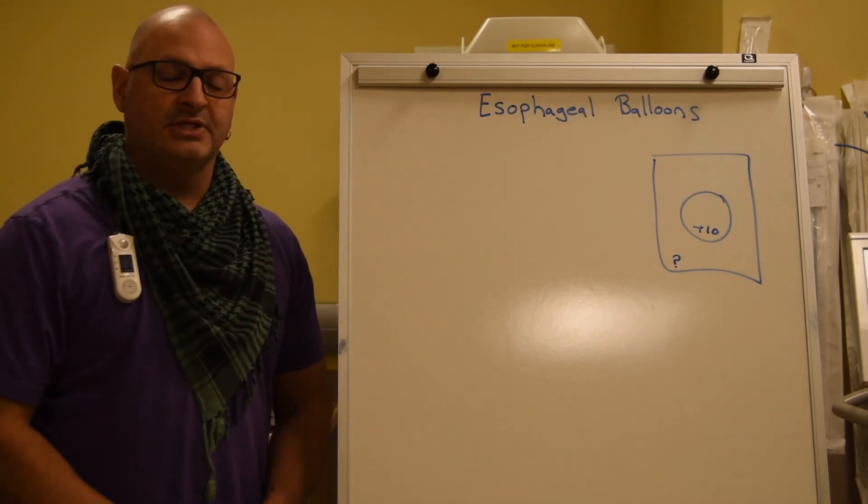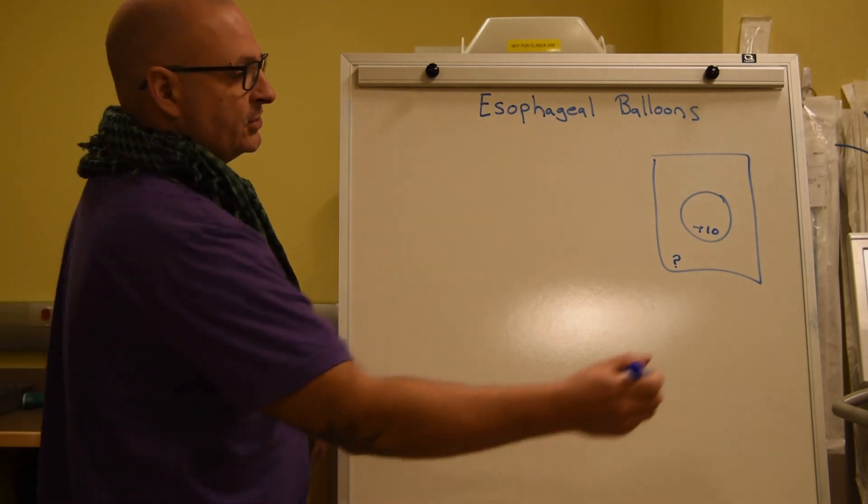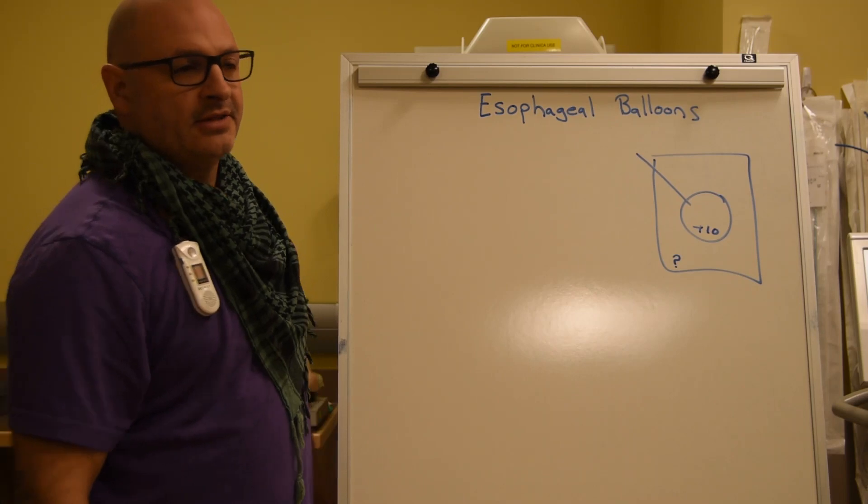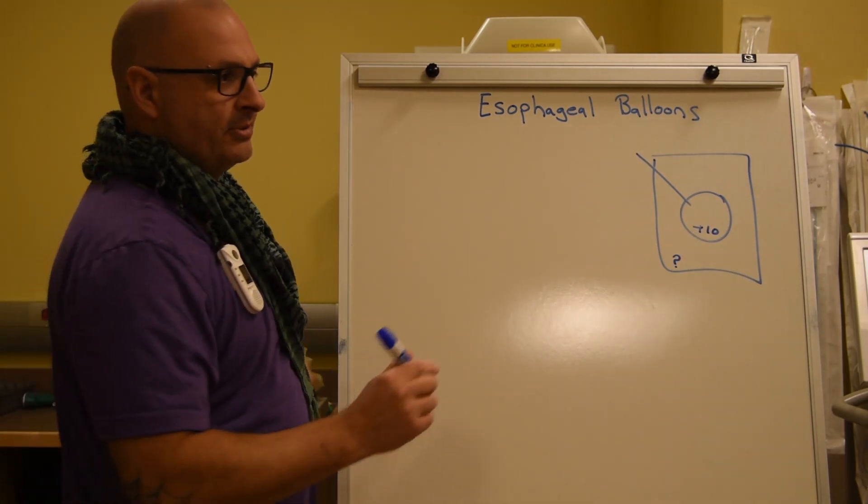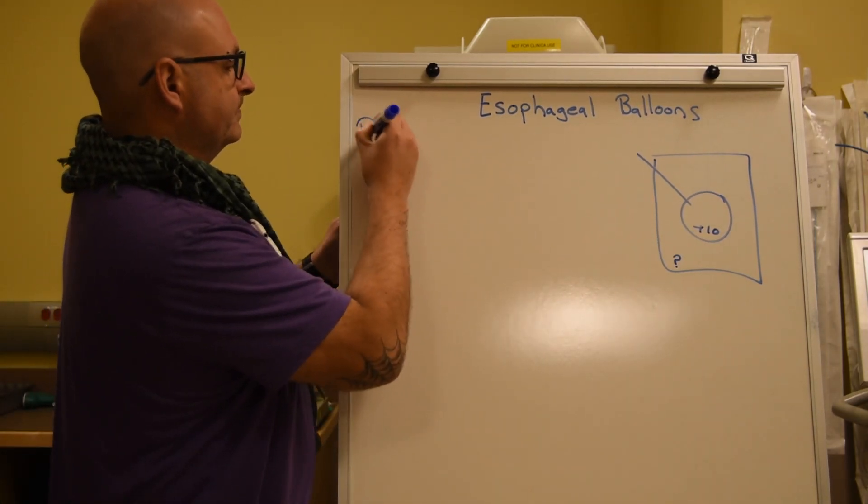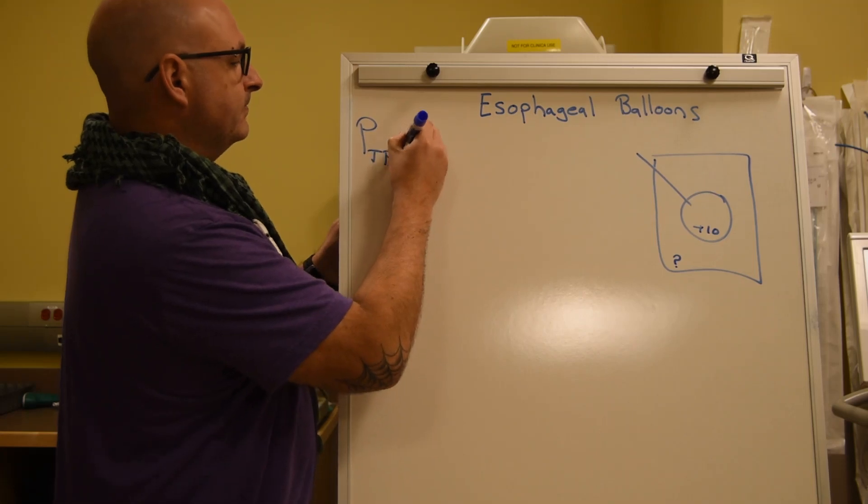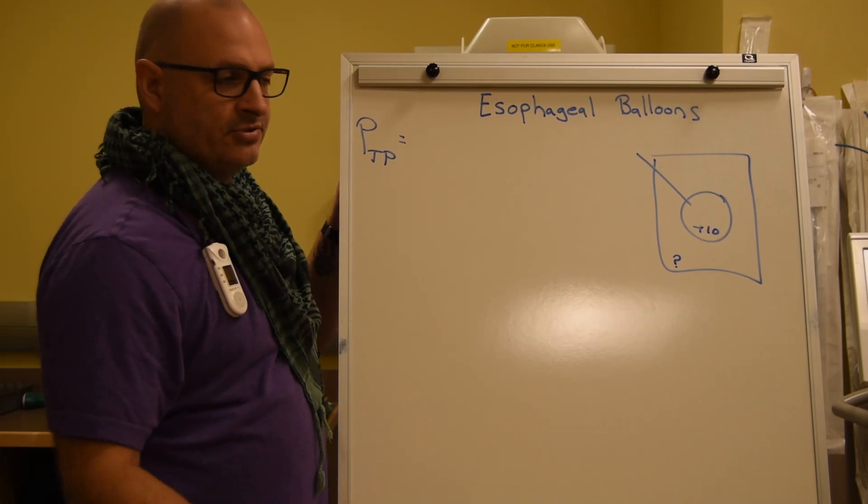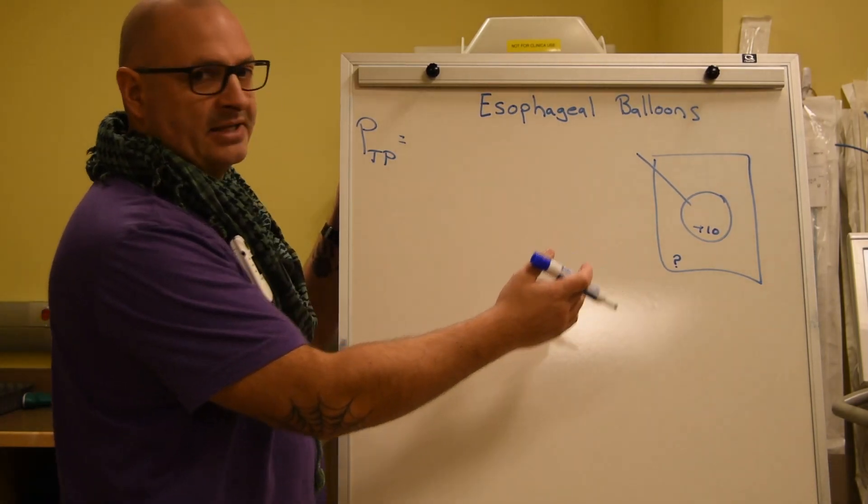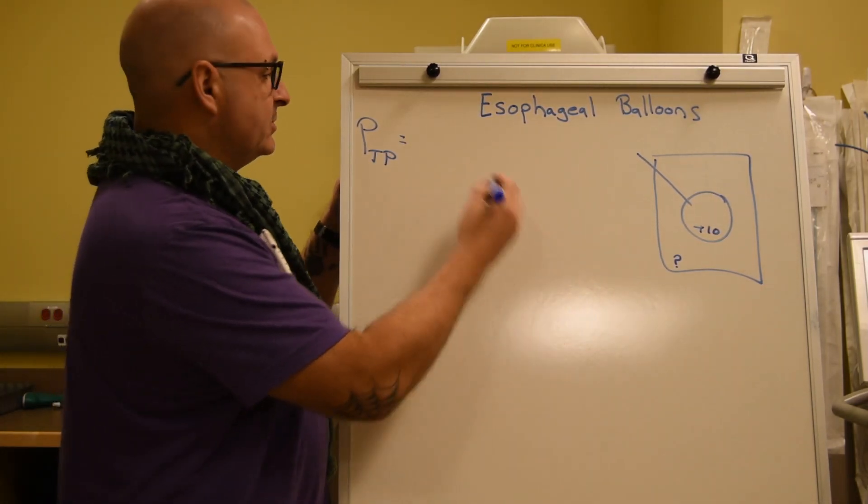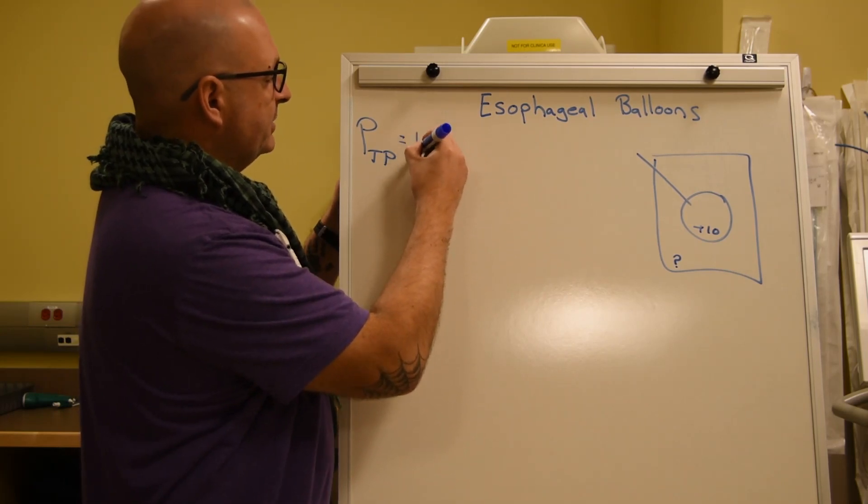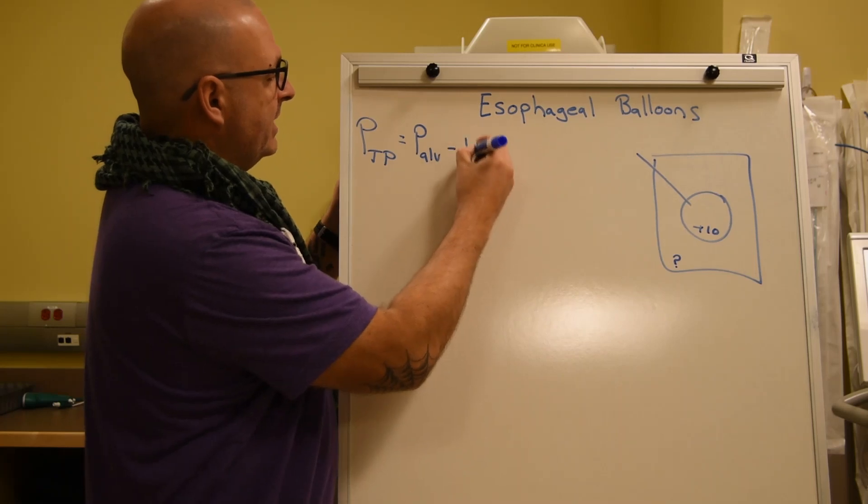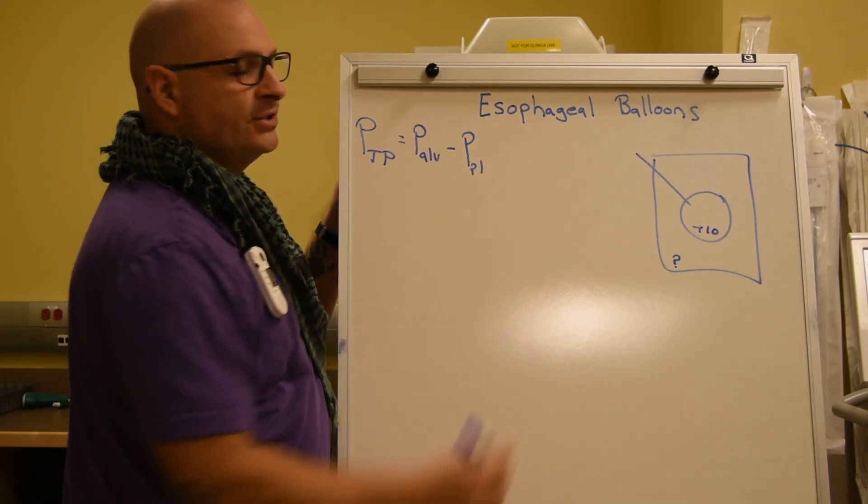What we're trying to really do is figure out the pressures that are going from the bag through the box. Those pressures are known as our transpulmonary pressures. Your transpulmonary pressure is actually equal to two things: the pressure in the bag and the pressure in the box. What we have is transpulmonary pressure equals the pressure within our alveoli minus the pressure in our pleural space.